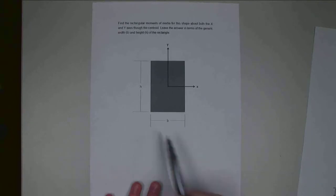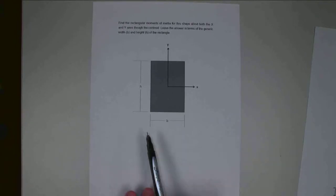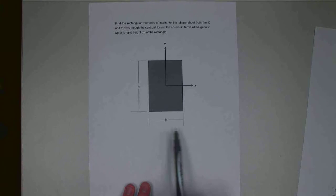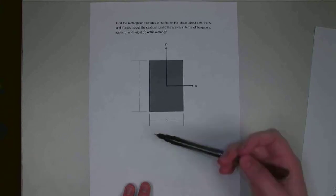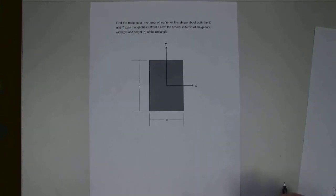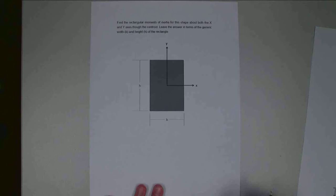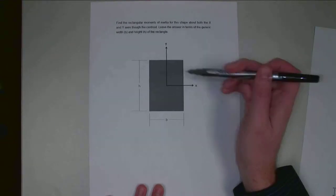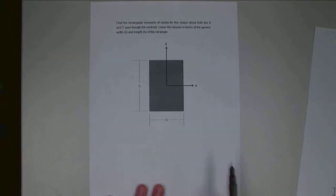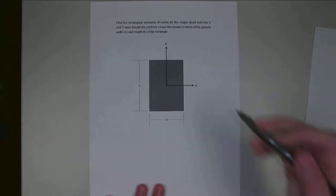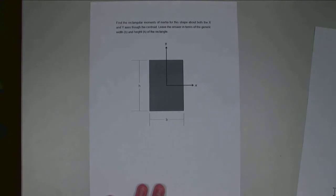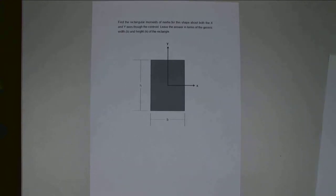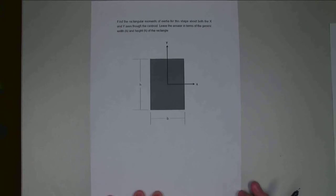Hello. For this problem, we have a generic rectangle with a base or width B and a height H. We are asked to find the rectangular moment of inertia for the shape about the X and Y axes through the centroid, which is going to be the center of this piece. So for this problem, I'm going to start with the X-axis.